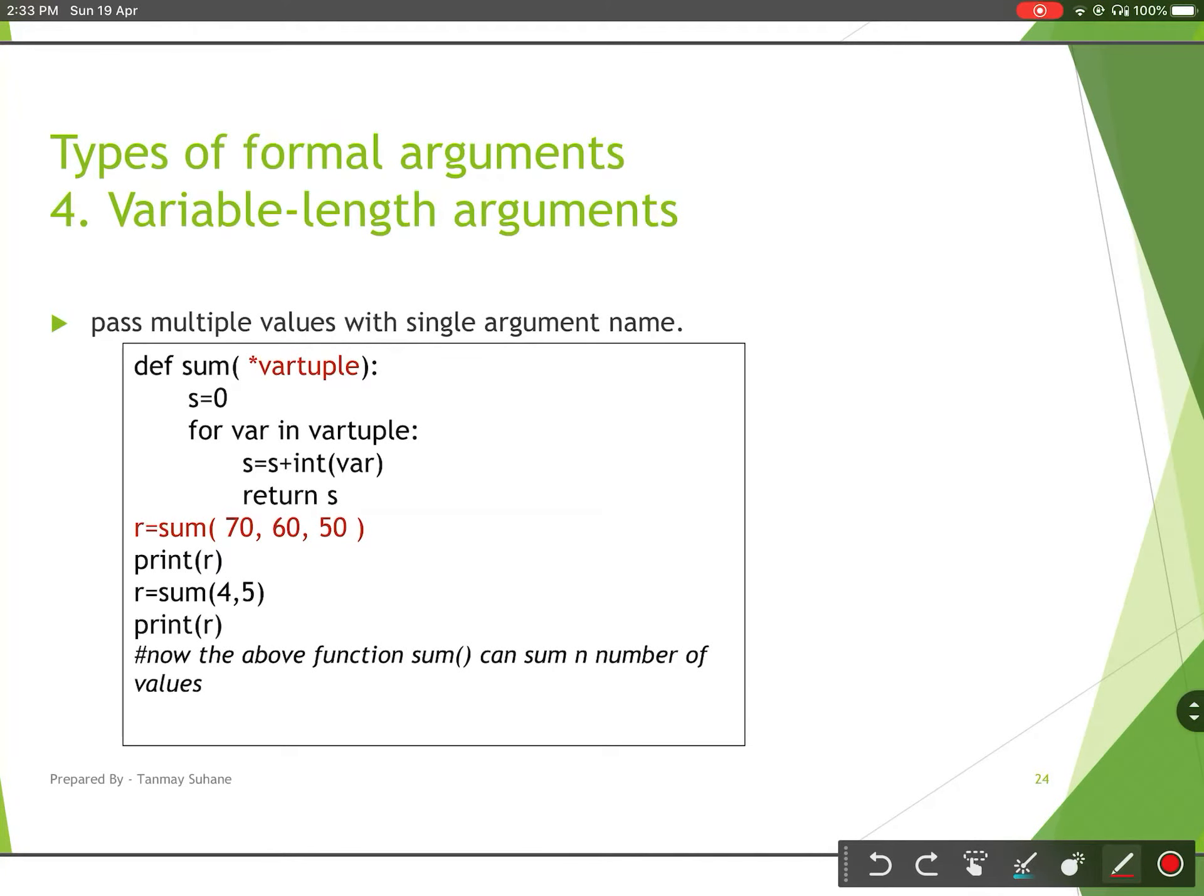Hello everyone. In the series of formal arguments, we have seen three types of arguments: positional argument, keyworded argument, and default argument. Today we will see what is variable length argument.